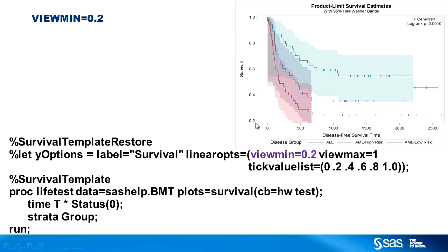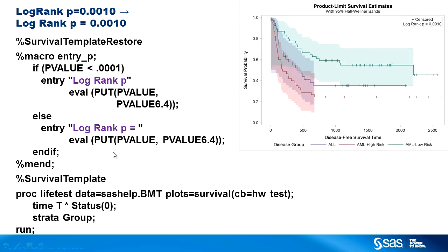Here I'm specifying view min equals 0.2, so now I'm starting the axis at 0.2 instead of the default of 0. The procedure is always the same: provide everything, change one small thing, compile, run the procedure. Most changes you'll ever want to make can be done with macro variables, but you can change macros as well. In this test statistic, it said 'logrank' with no space and no spaces around the equal sign. I redefine this string to add spaces, provide all the macros and macro variables, modify just the macro I want to change, compile everything, run the procedure, and now I have the new formatting for this p-value statistic.